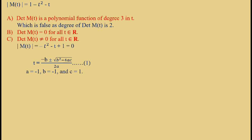Here, the value of a is equal to -1, b is also equal to -1, and c is equal to 1. Putting these values in equation 1, we get t to be equal to (1 ± √(1+4))/2, which gives t = (1 + √5)/2 and t = (1 - √5)/2.